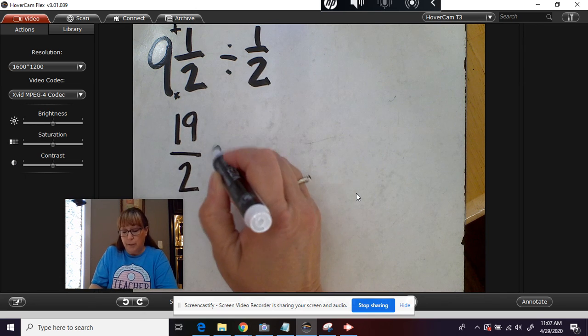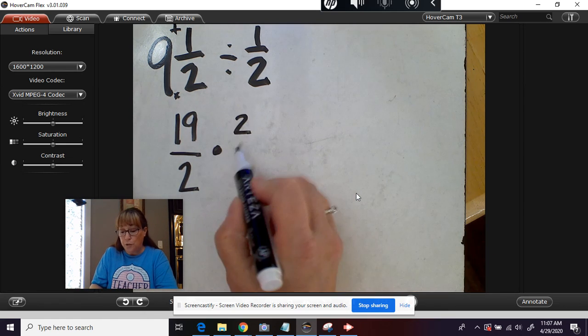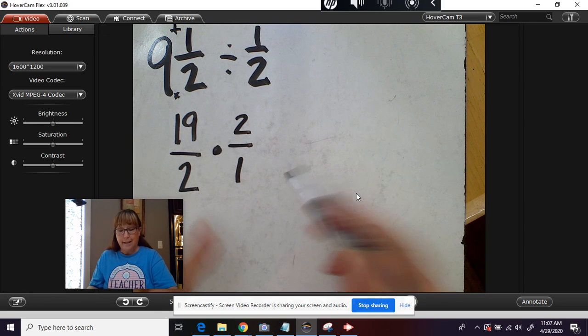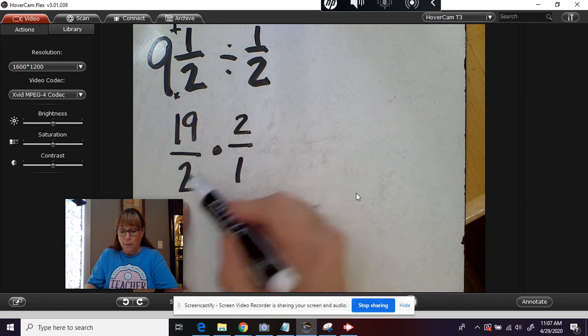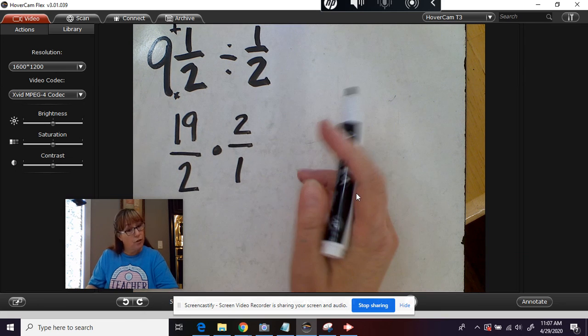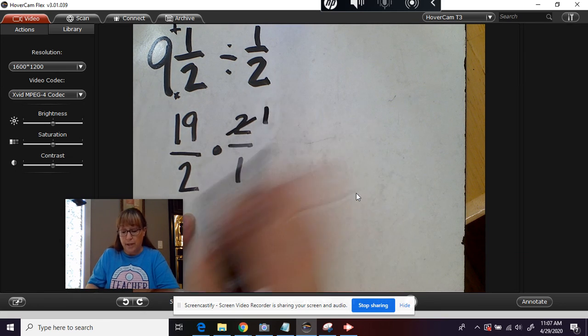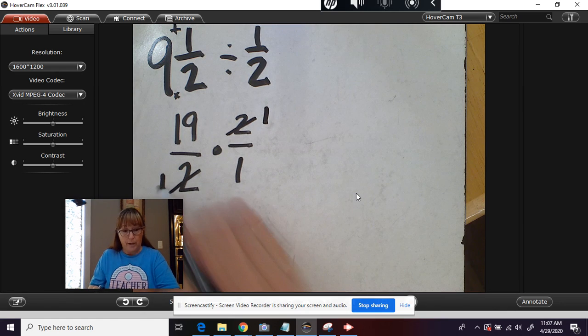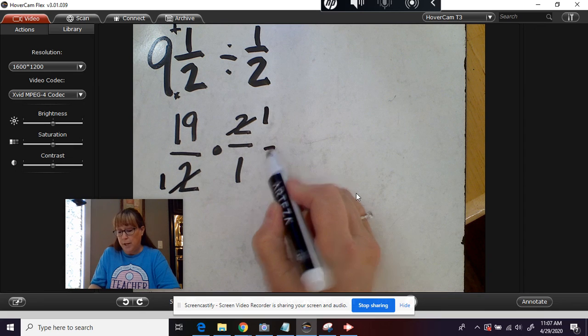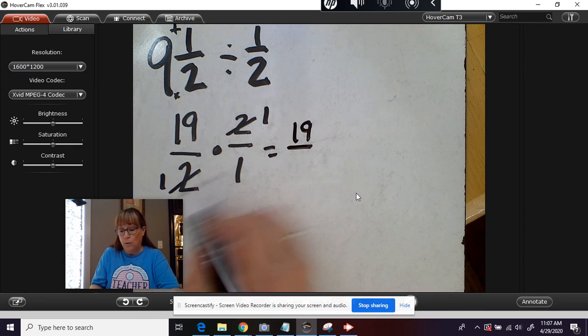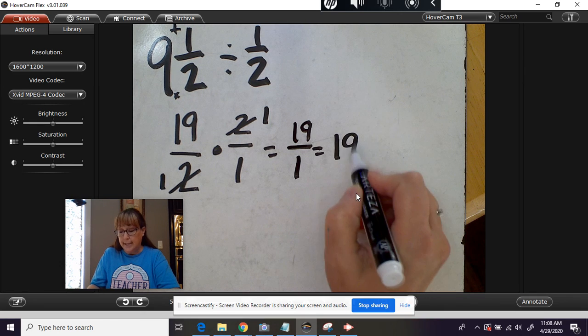We change this to multiplication, and we flip this to the reciprocal, which is two over one. Now we can do the cross multiply thing, which really is handy. We see two and we see two. Both of those divisible by two. So two divided by two is one. Two divided by two is one. Making our multiplication so much simpler. 19 times one is 19. One times one is one. Anything over one we know is 19.